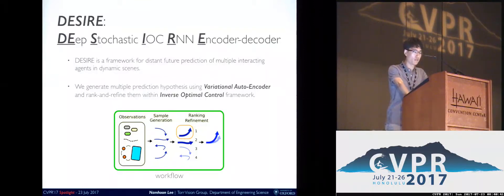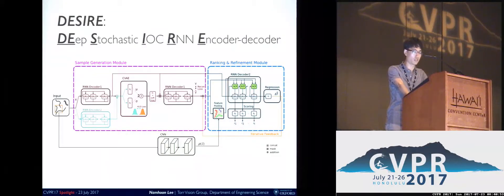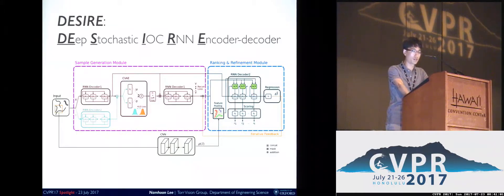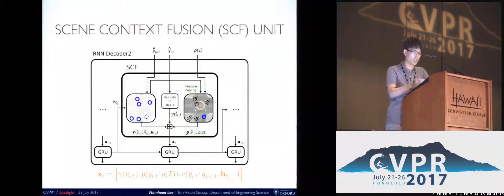Specifically, a conditional VAE first models the distribution over future and generates future trajectories given an agent's past motion through an RNN encoder decoder. Next, the following RNN assigns reward values to the prediction samples at each time step as an IOC strategy, and also learns to regress for the displacement vector. These displacement vectors are added back to the prediction samples iteratively. The final prediction would be the sample with the maximum accumulated rewards. Note that our SCF unit allows the decoder to take as input the dynamics of the agent, scene context, and interactions.